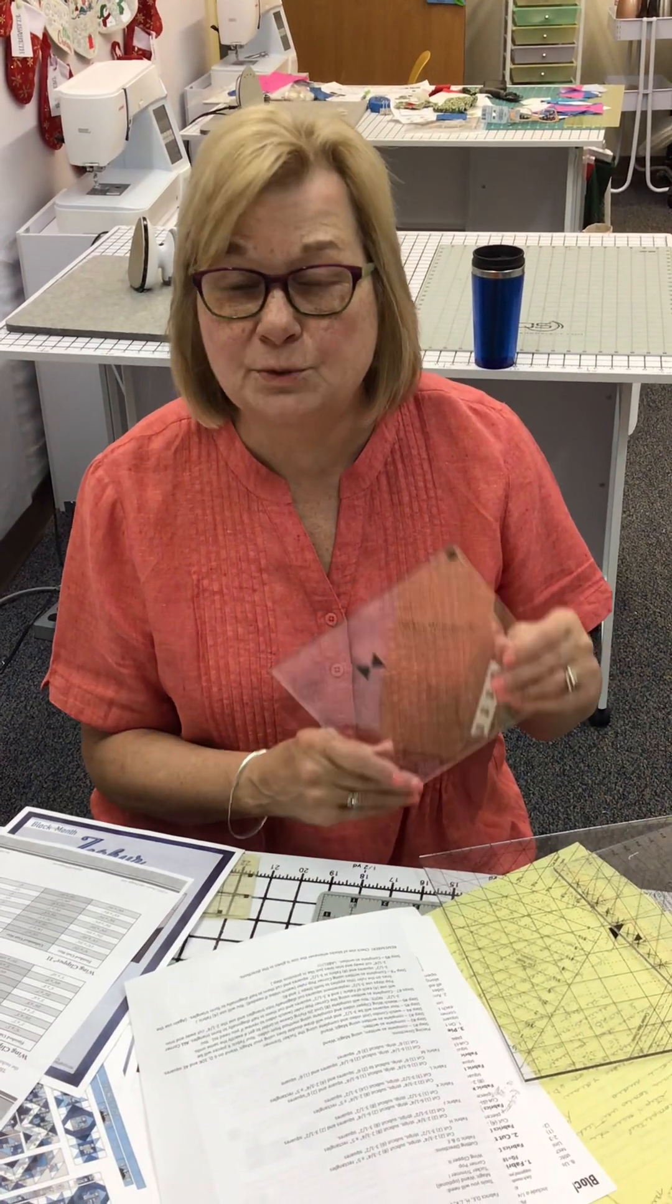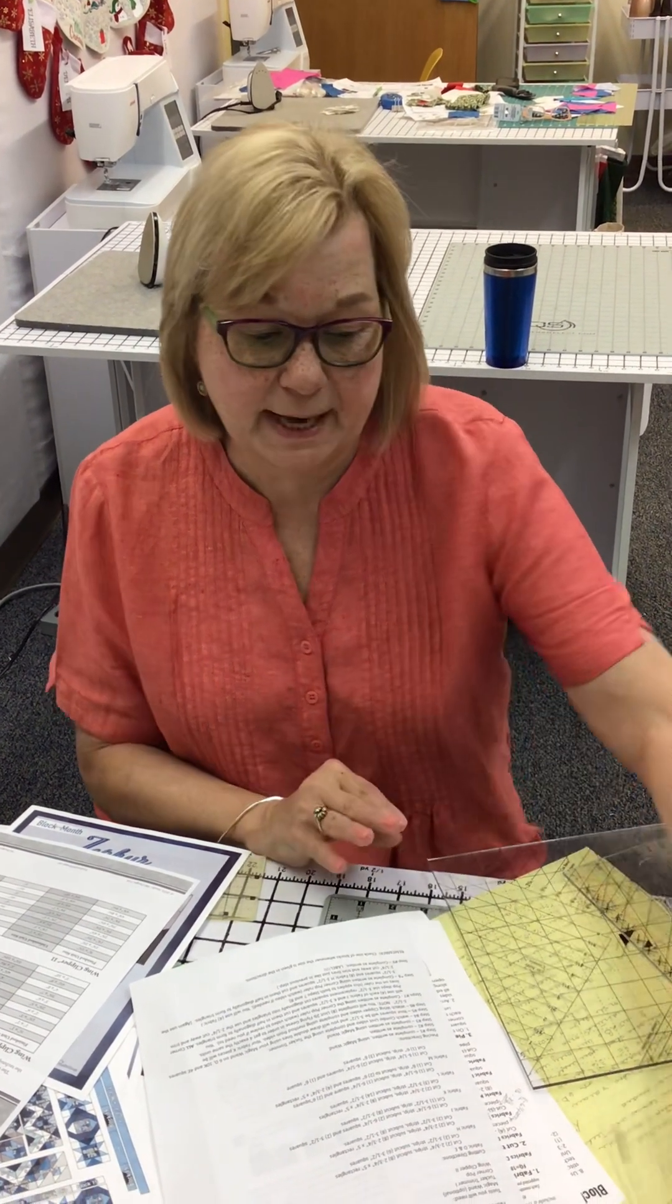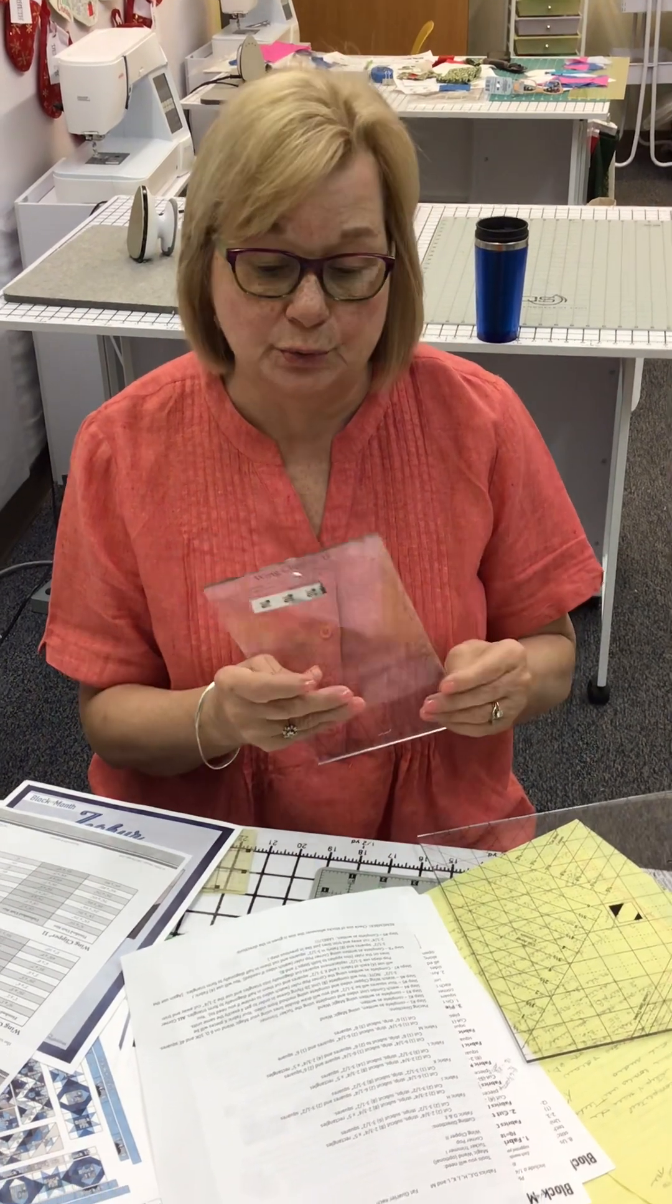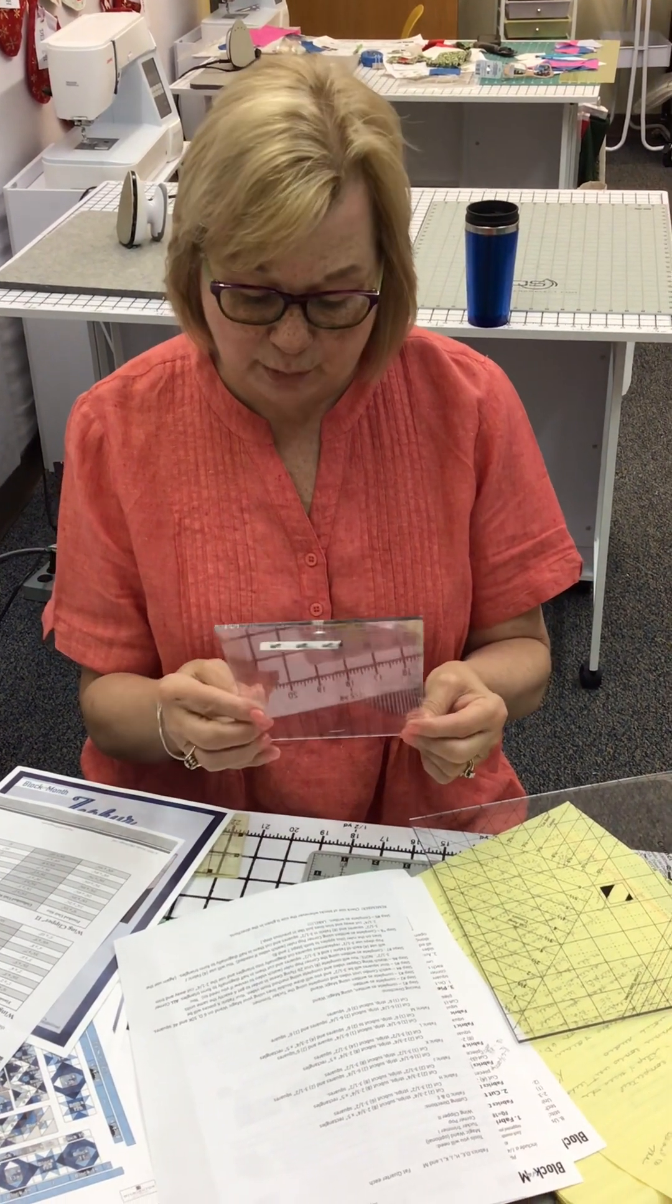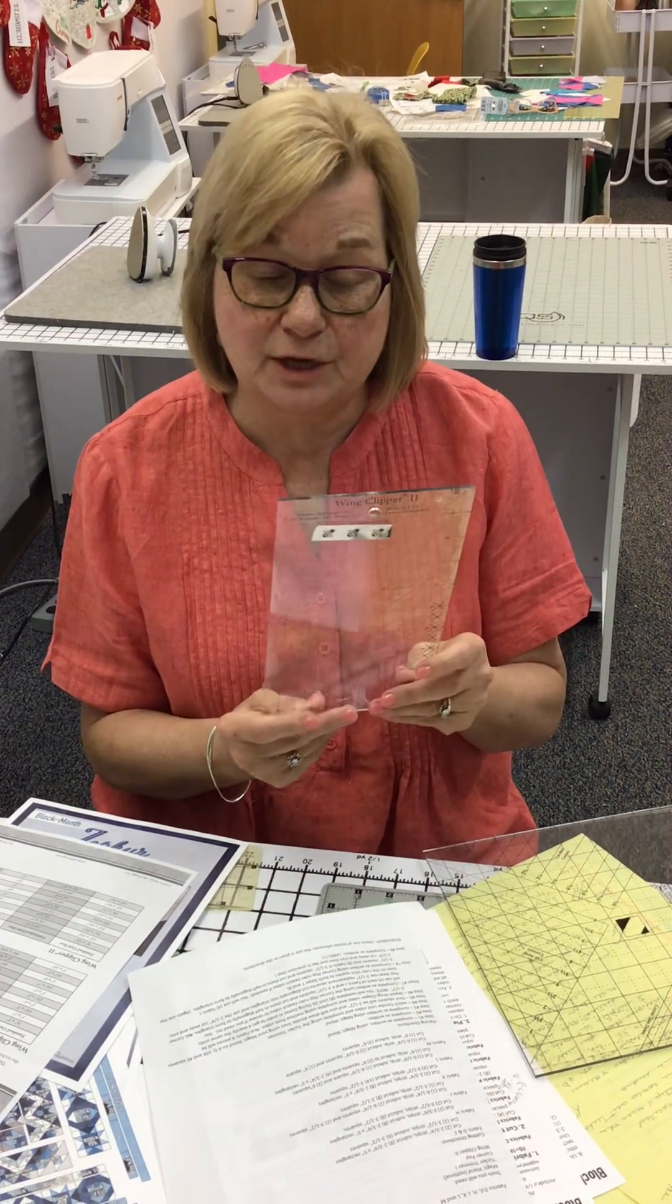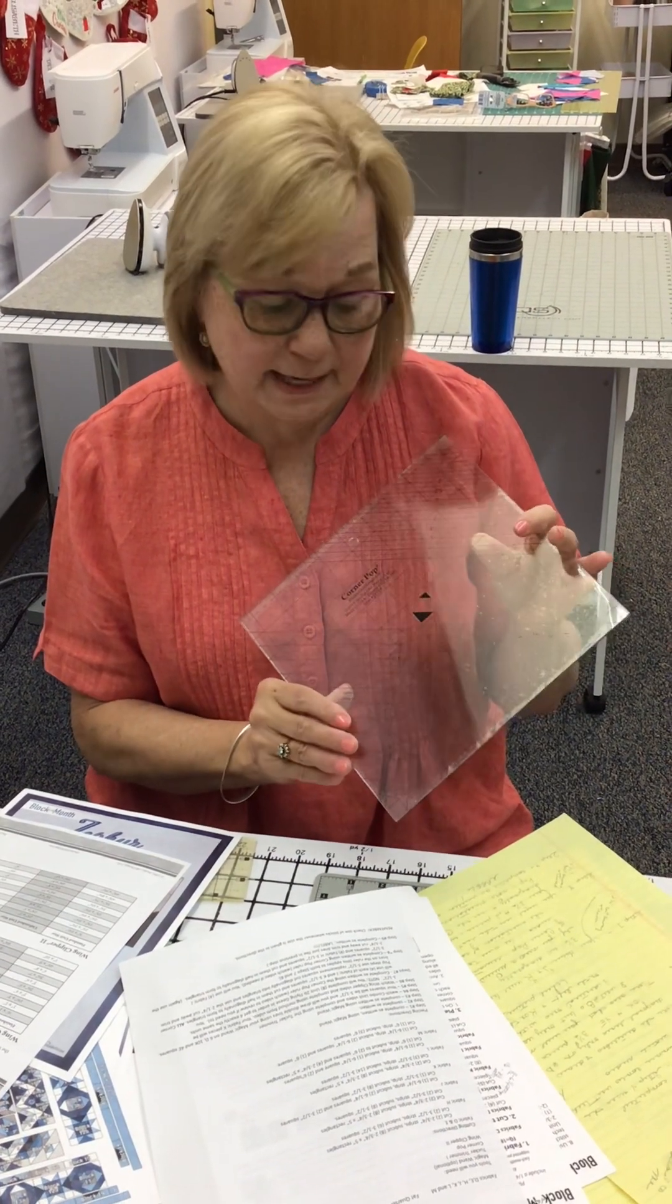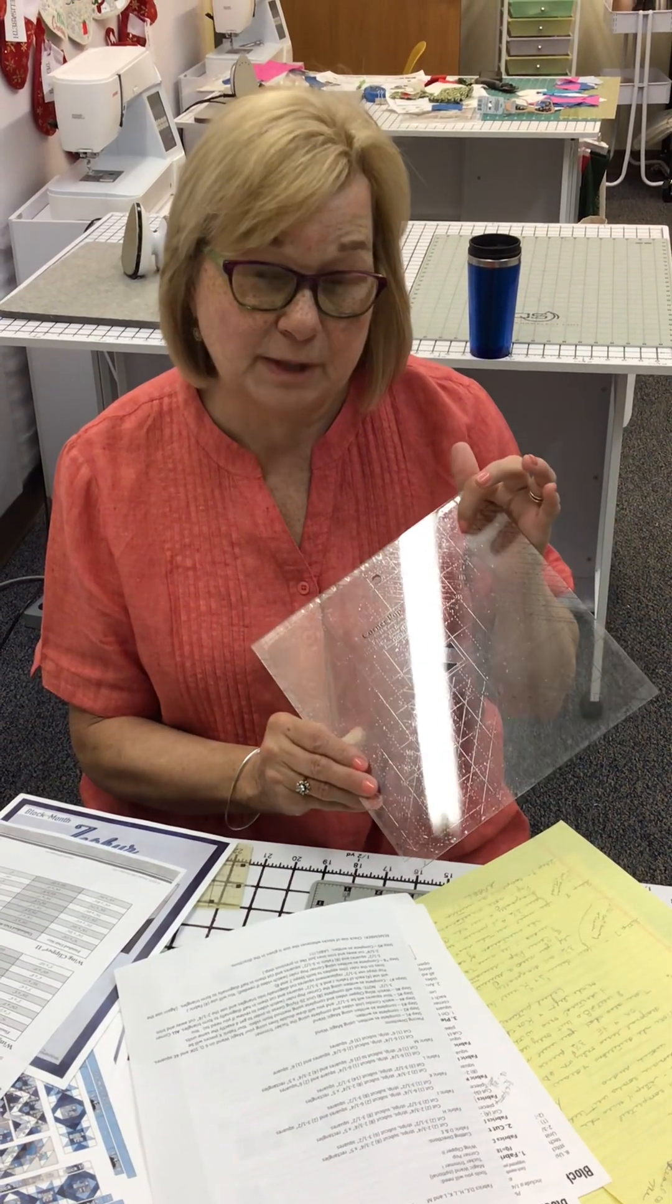What you're going to use this month are three of your rulers. You're going to use the Tucker Trimmer 1, and you will be making combination units. See that video on our website. You will also use the Wing Clipper 2. 2 is the quarter and three quarter inch marks, so you will be using that one. There's also a video for that on our website. And then the Corner Pop again. And the Corner Pop, you will be using the two and a quarter inch, both cutaway and trim line. We'll address that again later in the video. So those are the three rulers that you will be using.